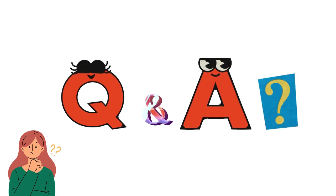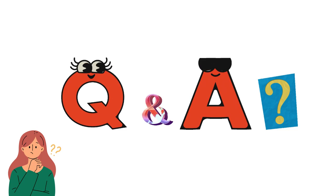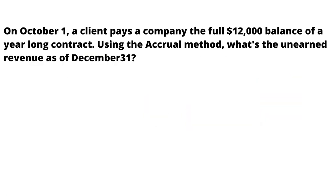So let's start the question. On October 1, a client pays a company the full amount of $12,000 for the balance of a year-long contract. The client pays $12,000 to a company for a year-long contract.